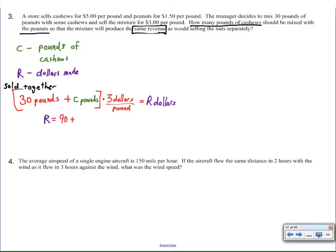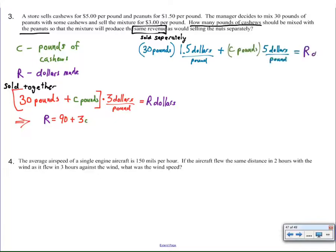So one way that I can make money by selling peanuts and cashews would be to add some cashews to 30 pounds of peanuts, charge $3 a pound, and that will give me money. Or I could sell separately. If I sold separately, then I'm going to sell 30 pounds of peanuts at $1.50 a pound, and I'm going to sell C pounds of cashews - I don't know how much - but I'm selling those at $5 a pound, and that will give me my revenue sold separately. We have an equation for sold separately and we have an equation for sold together, both giving us revenue, both dependent on the amount of pounds of cashews that we have.